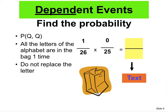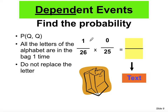So find the probability of this dependent event: what is the probability of getting a Q and then another Q if all the letters of the alphabet are placed in the bag one time and you do not replace the letter? Since there are 26 letters in the alphabet, there are 26 items inside the bag — that is your total number of outcomes. There is only one Q in there. So when you get a Q, that is one out of 26 for your first chance.